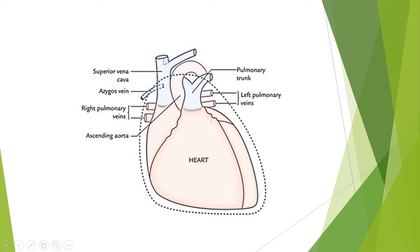Remember, there are two veins: one is called superior vena cava and another is called inferior vena cava. They drain deoxygenated blood from the upper and lower parts of the body into the right atrium of the heart. From the right atrium, the blood will go into the right ventricle through some valves.